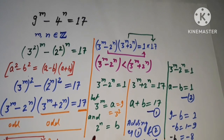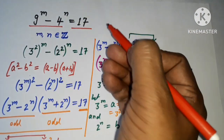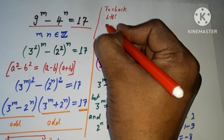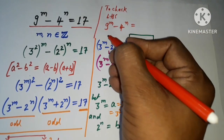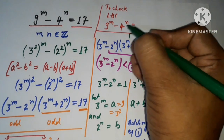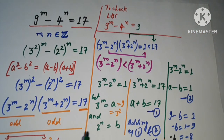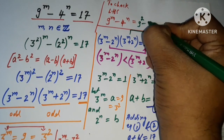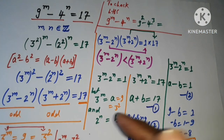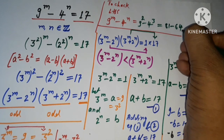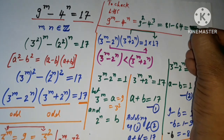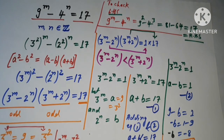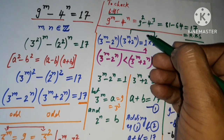Let's check whether this is right or wrong. Our LHS term is 9 to the power m minus 4 to the power n. Putting m equals 2 and n equals 3: we get 9 squared minus 4 cubed, which is 81 minus 64, which equals 17. That is our RHS. So LHS equals RHS, which indicates that our solution is correct.